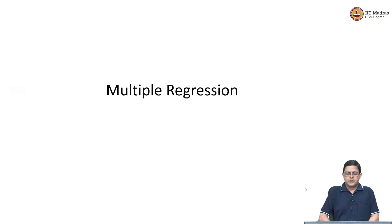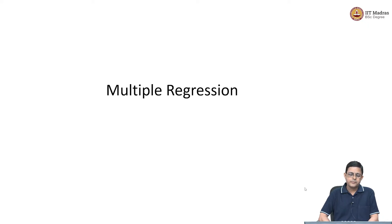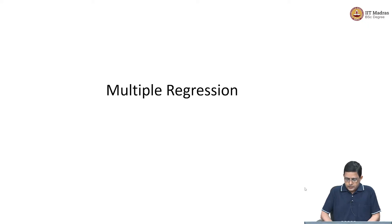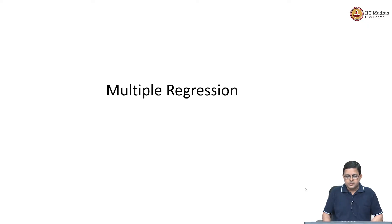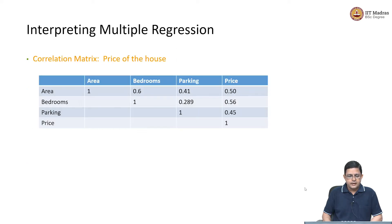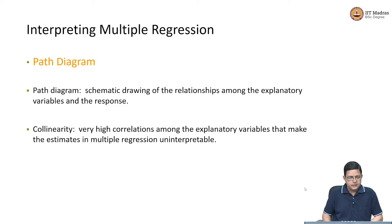Welcome back to this session on multiple regression. In the previous session, we saw how path diagrams help us understand the direct and indirect effect of an explanatory variable on the response variable, and path variables are more relevant when the explanatory variables are correlated. Today, we are going to extend that discussion and talk about one more quantification of this collinearity — the relationship between explanatory variables — referred to as collinearity or multicollinearity.